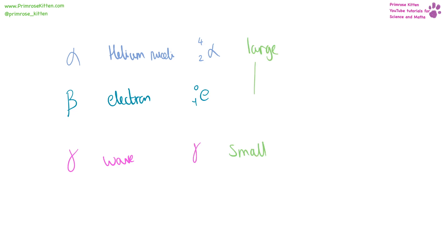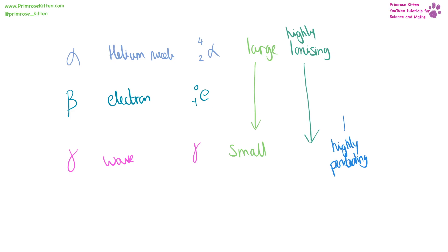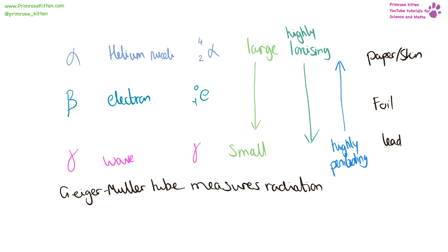Alpha radiation is very large, whereas gamma radiation is very small. Alpha radiation is highly ionizing, whereas gamma radiation is not. Ionizing means how good it is at knocking electrons off — how good it is at turning something into an ion. Gamma radiation is highly penetrating, whereas alpha is not. To stop alpha radiation, a bit of paper or skin will do it. Aluminium foil or thin foil will stop beta radiation, but thick lead is needed to stop gamma radiation. A Geiger-Müller tube will measure radiation — it generally clicks every time it detects radiation — and the unit for radiation is the Becquerel.